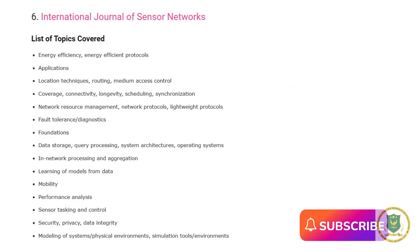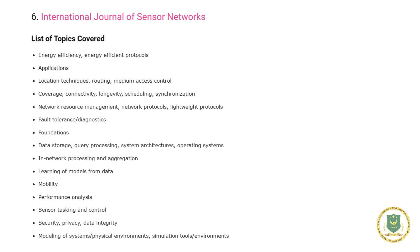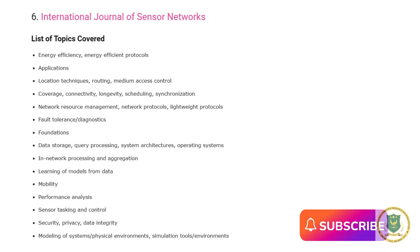Number six: International Journal of Sensor Networks. Topics covered include energy efficiency, energy efficient protocols, applications, location techniques, routing, medical, access control, coverage, connectivity, longevity, scheduling, synchronization, network resource management, network protocols, lightweight protocols, fault tolerance or diagnostics, foundations, data storage, query processing, system architectures, operating systems, in-network processing and aggregation, learning of models from data, mobility, performance analysis, sensor tasking and control, security, privacy, data integrity, and modeling of systems or physical environments.